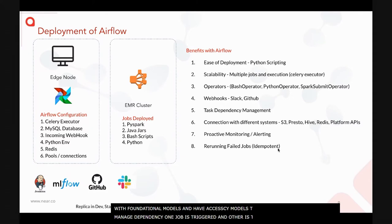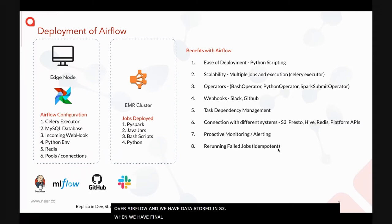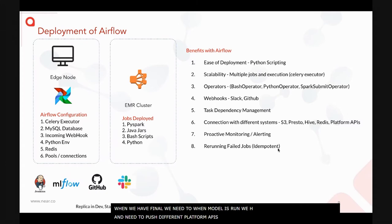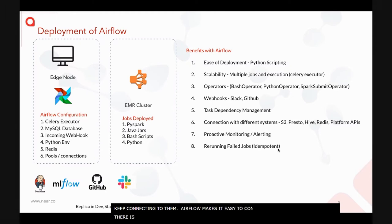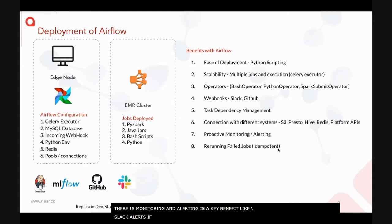Our data is stored in S3, but once pipelines complete we push results to different platforms: APIs, Presto DB, Redis, and various other databases. Airflow makes it easy to connect with all these systems. Monitoring and alerting is also a key benefit — we get Slack alerts whenever any job fails, and rerunning failed jobs becomes very easy.